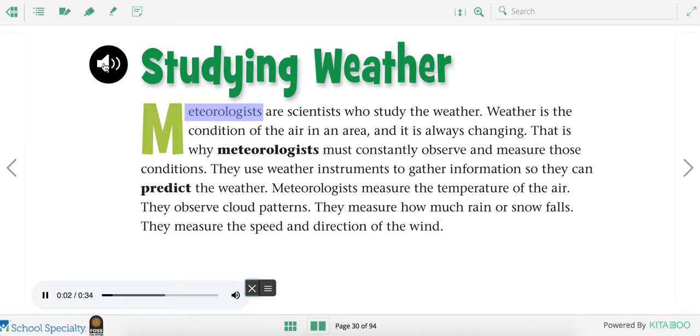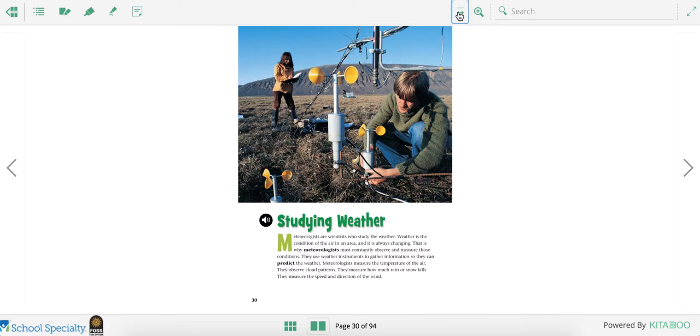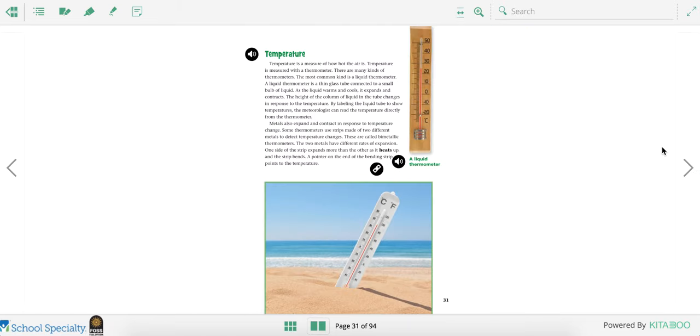Studying weather. Meteorologists are scientists who study the weather. Weather is the condition of the air in an area and it is always changing. That is why meteorologists must constantly observe and measure those conditions. They use weather instruments to gather information so they can predict the weather. Meteorologists measure the temperature of the air, observe cloud patterns, measure how much rain or snow falls, and measure the speed and direction of the wind. One thing you might notice is that they always seem to know about the temperature. That's how hot it is.